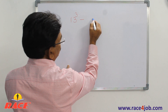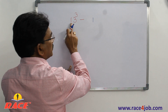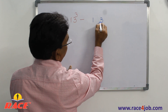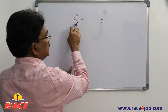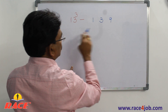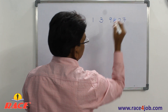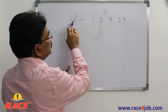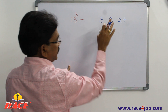First position is 1 cubed — that is 1. Second position is 1 squared into 3 — one squared is 1, into 3 is 3. Third position is 3 squared into 1 — three squared is 9, into 1 is 9. Fourth position is 3 cubed — that is 27. So the four positions are: 1, 3, 9, 27.